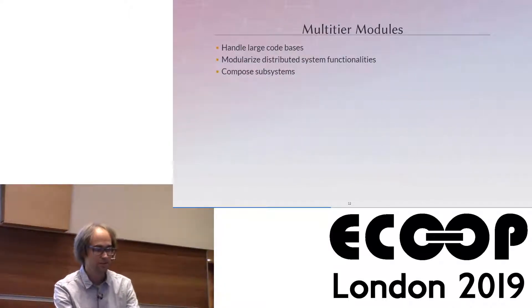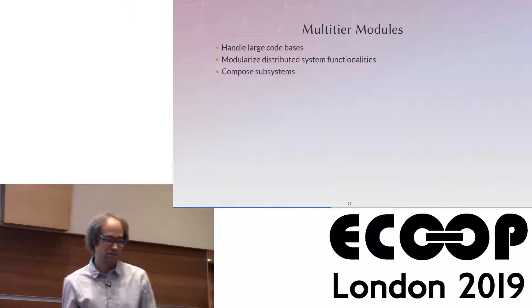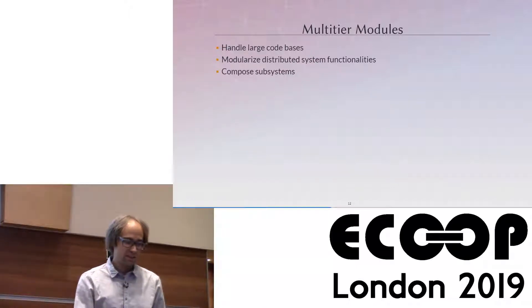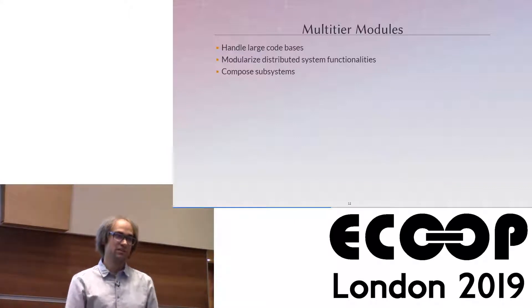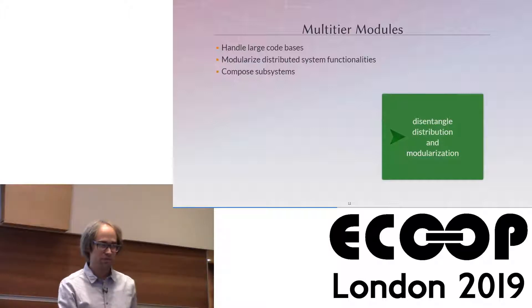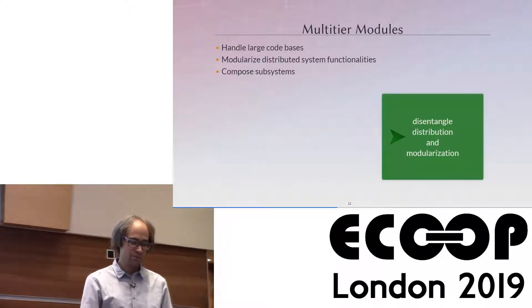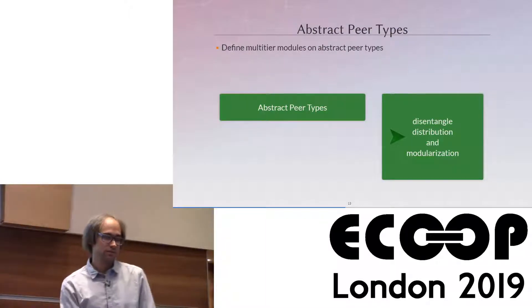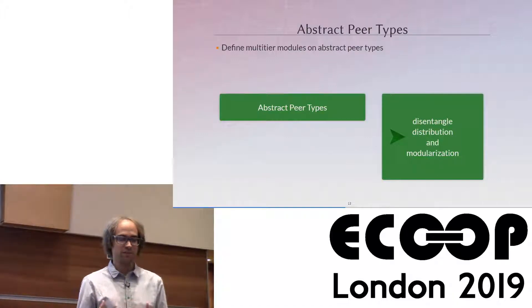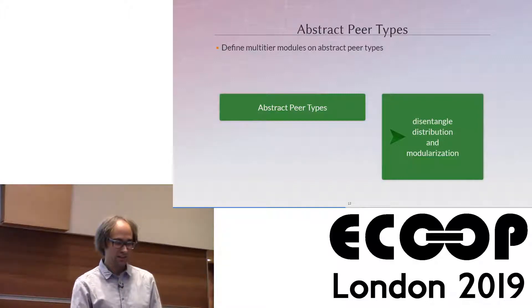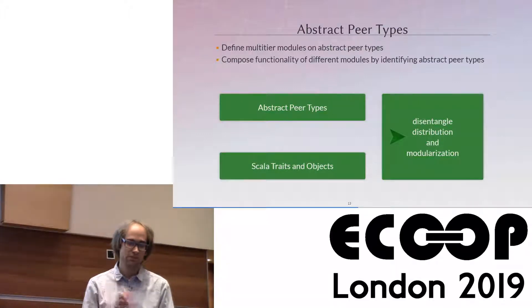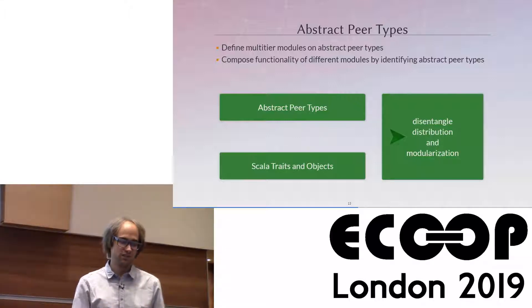Let me present a multi-tier module system for ScalaLoki. Modularization is essential to support large code bases, but traditionally modules are confined to a single component of the distributed system. Our multi-tier module system allows for composing subsystem functionalities which are themselves distributed, by disentangling distribution and modularization concerns. We achieve this by defining peers as abstract types, keeping them open for composition. Multi-tier modules are defined on abstract peer types, and peer types represent logical locations in the distributed system and enable composition. We use standard Scala traits and objects for modularization, and peer types of different modules can be identified to unite different locations.